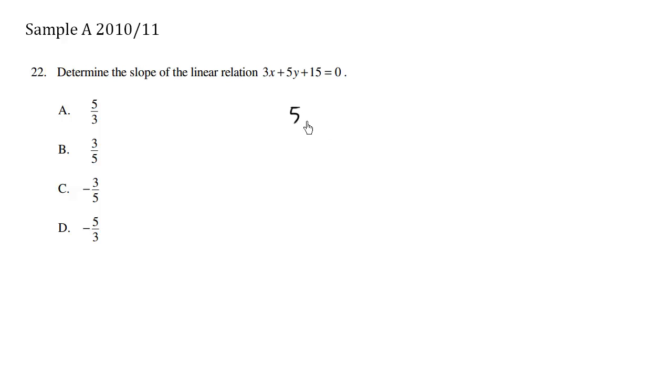So we have 5y equals negative 3x. We move the 3x over, it switches signs. And we also have to move the 15 over, so here it switches signs, negative 15.